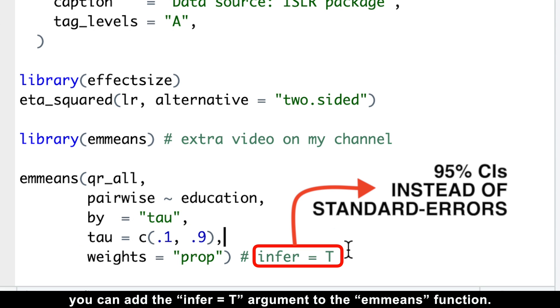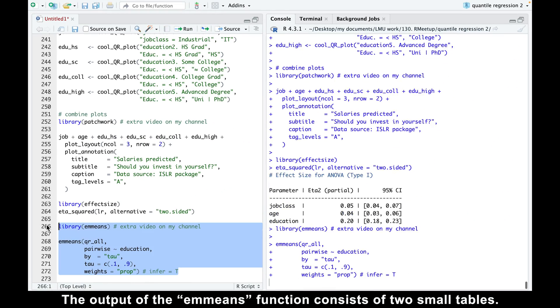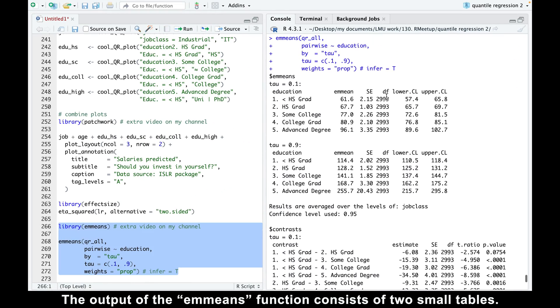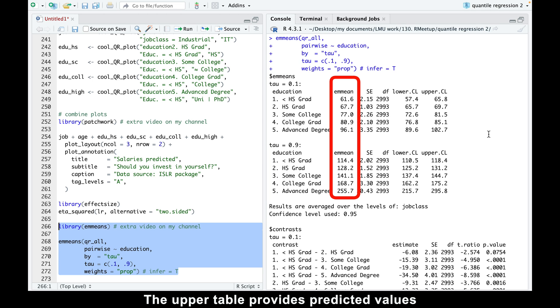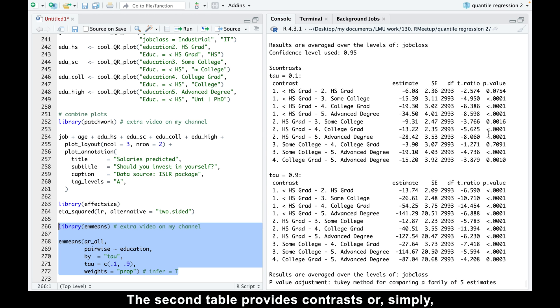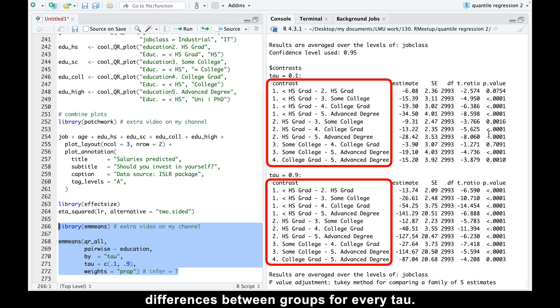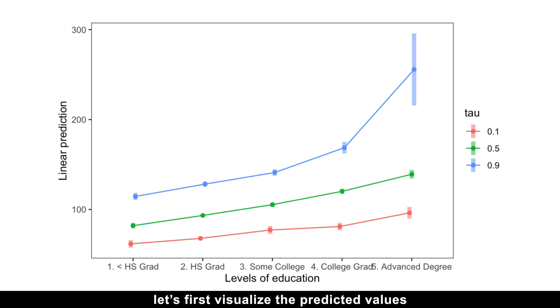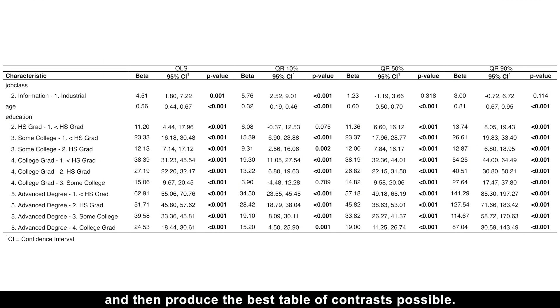If you prefer to have 95% confidence intervals instead of standard errors, you can add the infer equals true argument to the emmeans function. The output of the emmeans function consists of two small tables. The upper table provides predicted values for every group of the categorical predictor and for every tau. The second table provides contrasts or simply differences between groups for every tau. To make these tables even more useful, let's first visualize the predicted values and then produce the best table of contrasts possible.